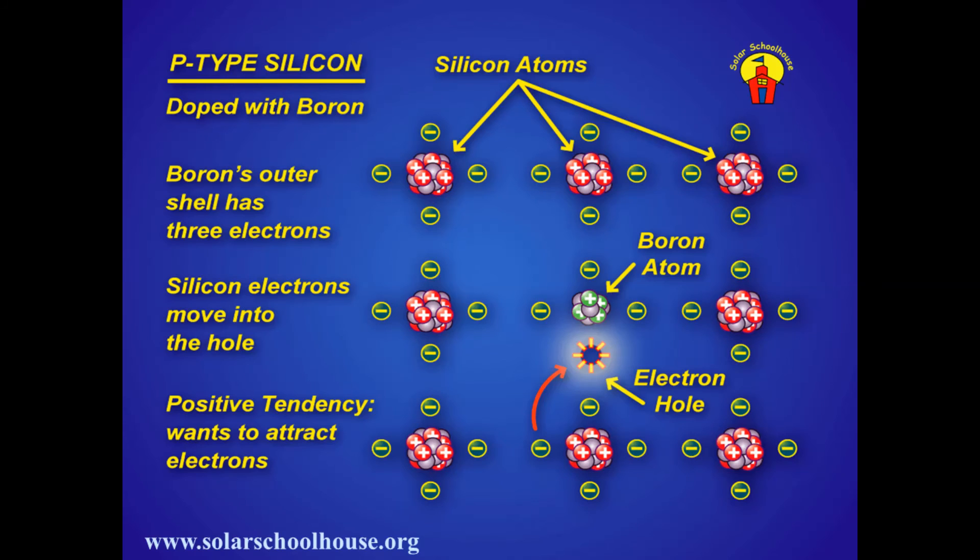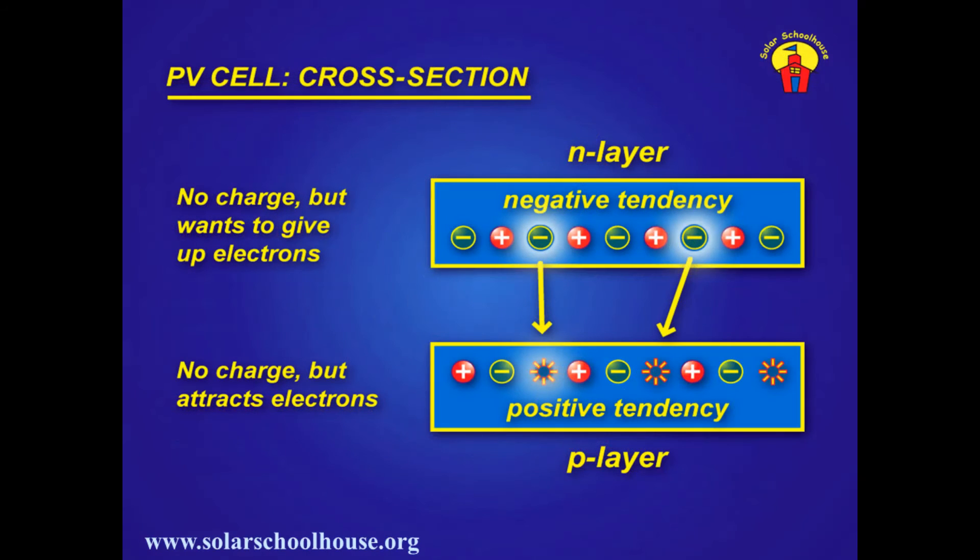If separate, these layers would have no electric charge, but each would exhibit electrical tendencies as shown here. The top N layer has a tendency to give up electrons. The bottom P layer has a tendency to attract electrons.